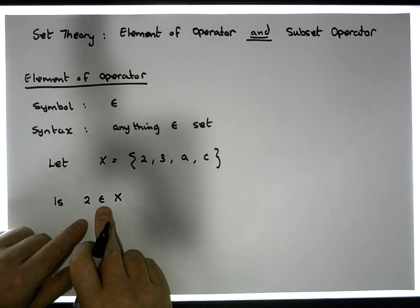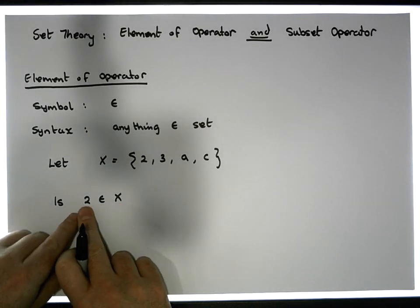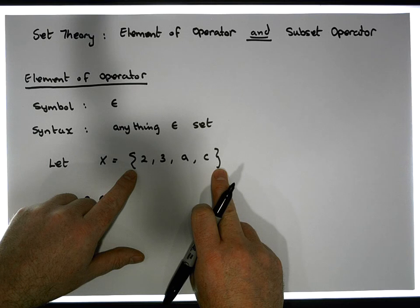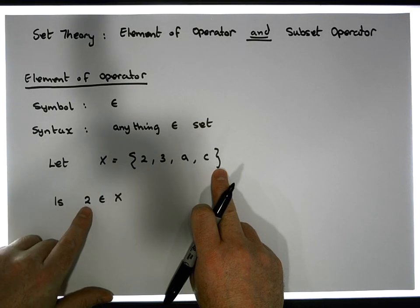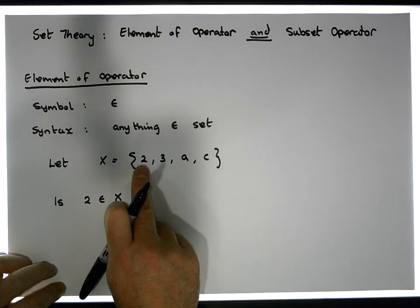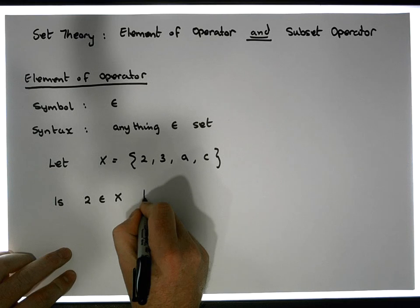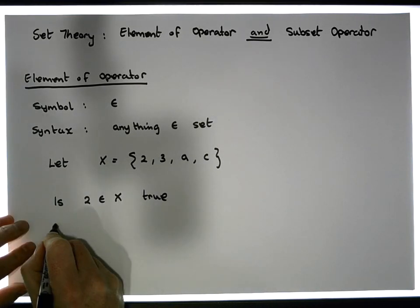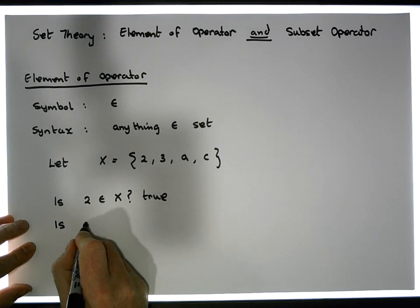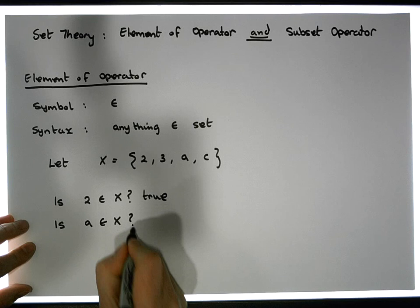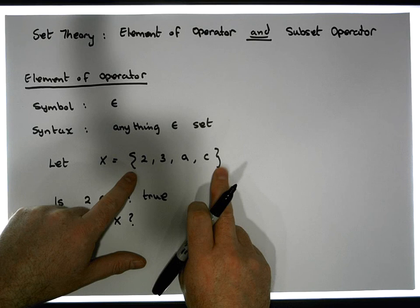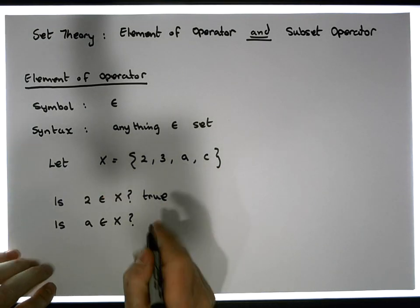For example: is 2 an element of X? For this to return true, what we see on the left-hand side of the operator must appear within the curly brackets of the set, in that particular form. There is a 2 listed in this set, so 2 is an element of X — this is true. Similarly, is a an element of X? For a to be an element of X it needs to be listed within set X, and there's an a there, so this is also true.